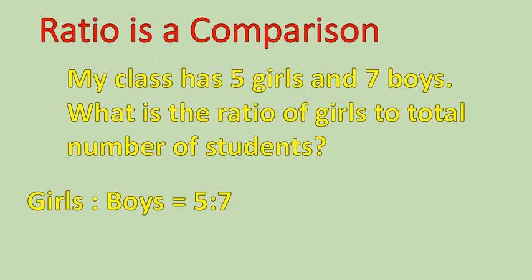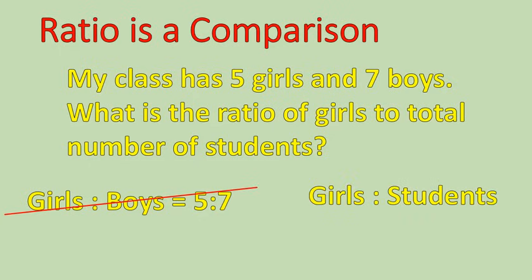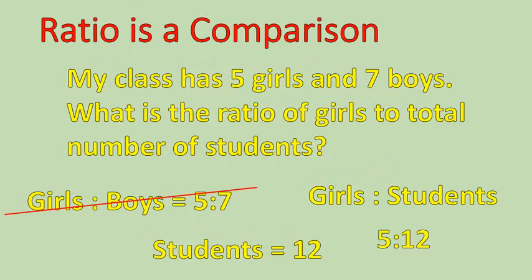And the biggest mistake is for people to do this. Girls to boys, five to seven. And while that is a correct ratio of girls to boys, it's not what the question's asking us for. We're not looking for a ratio of girls to boys. We are looking for a ratio of girls to total number of students. And that adds one step in our problem solving. So, we know the number of girls is five. But what we don't know is the total number of students. So, we have to do a little bit of math to figure out that there are five girls and seven boys. Five plus seven is twelve.